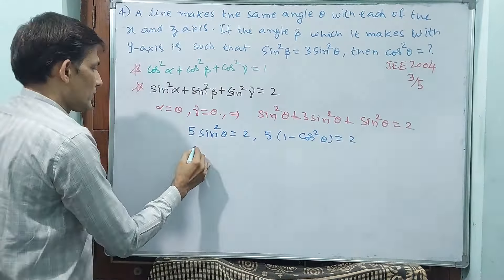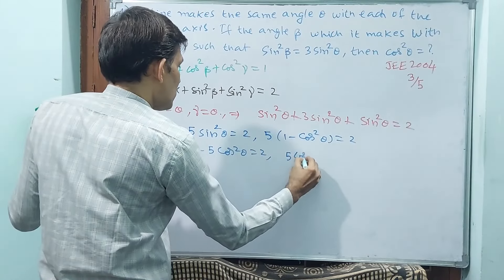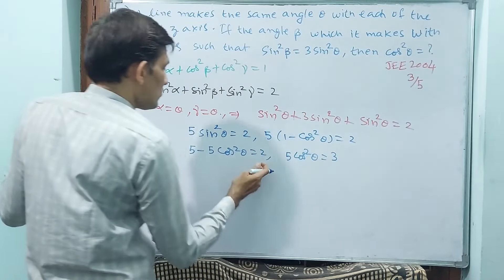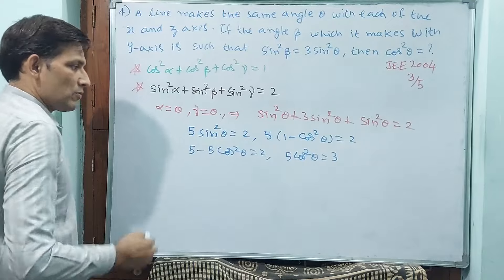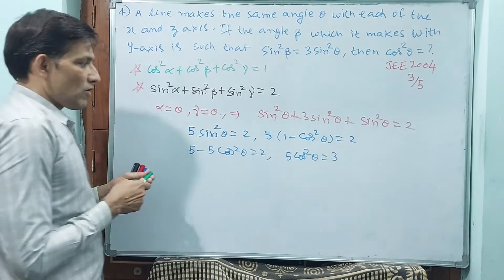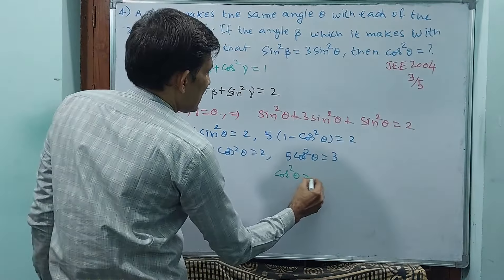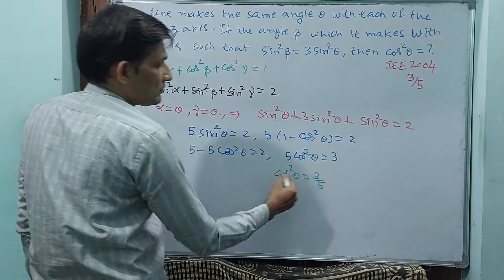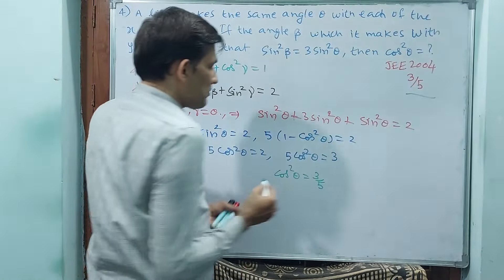5 cos square theta is equal to 3. Then you have got the cos square theta value. Cos square theta is equal to 3 by 5. 3 by 5. 3 by 5 will be your answer.